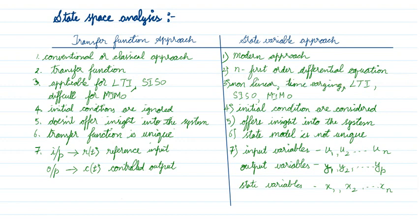Non-linear and time-varying systems are purely a research area. So from our undergraduate point of view, we will take LTI systems — single input or multiple input, multiple output — for the state variable approach. We are not going to deal with non-linear and time-varying systems. In the transfer function approach, we ignore the initial conditions. For example, a capacitor may hold some charge before input is given, or an inductor may already hold some current — these are initial conditions. In the state variable approach, we consider the initial conditions.